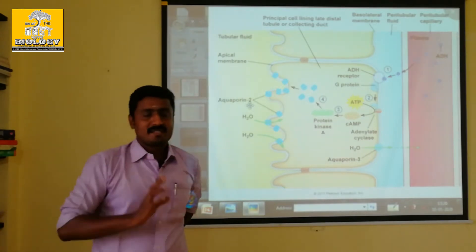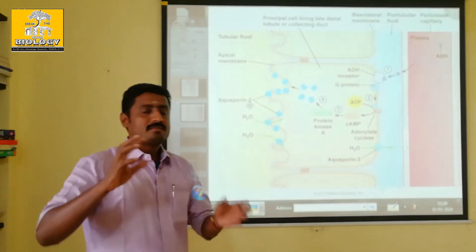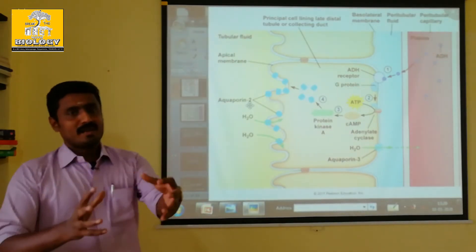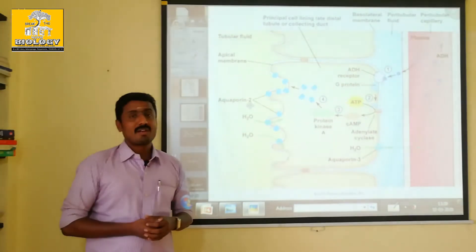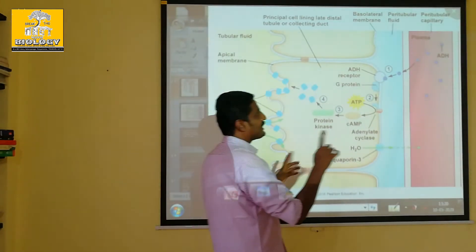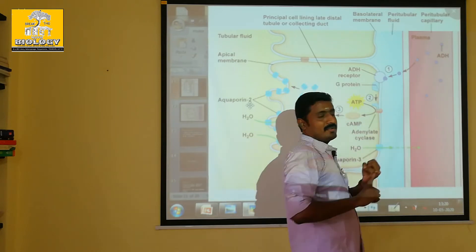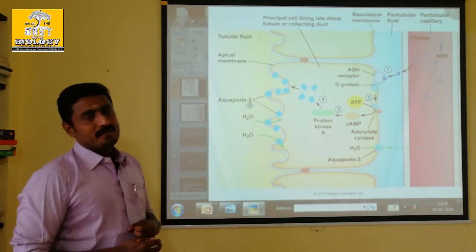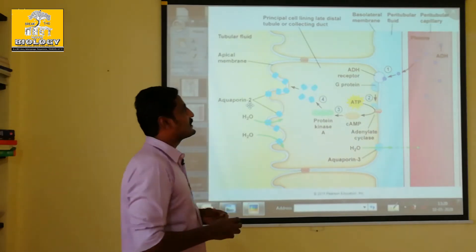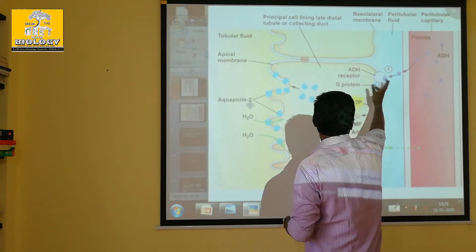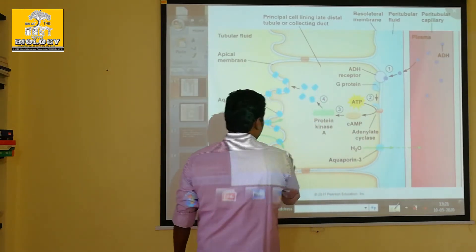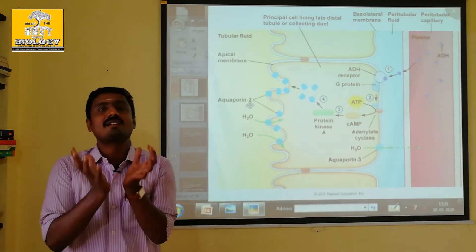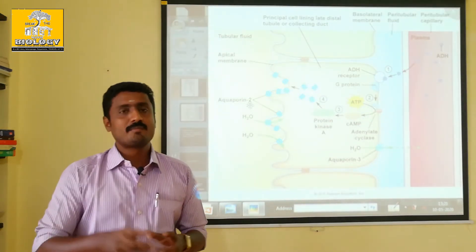If someone has ADH, the osmoreceptors detect increased blood osmolarity and send signals. ADH is produced. If ADH is deficient, there are reasons for this. What would happen if ADH is deficient?